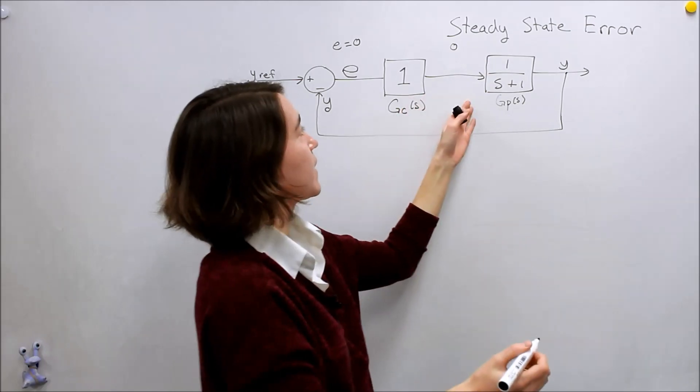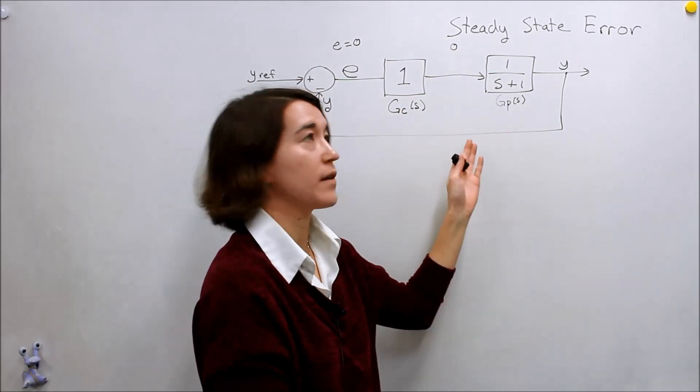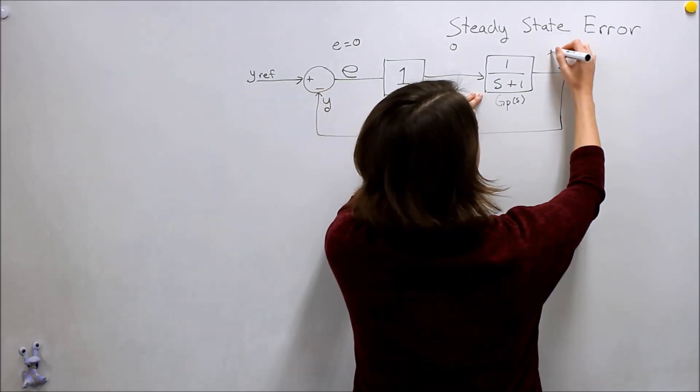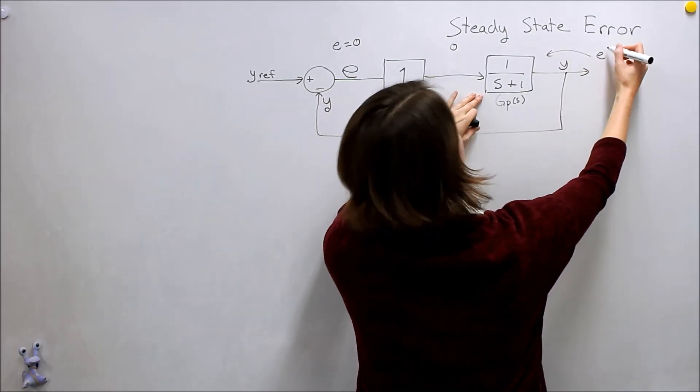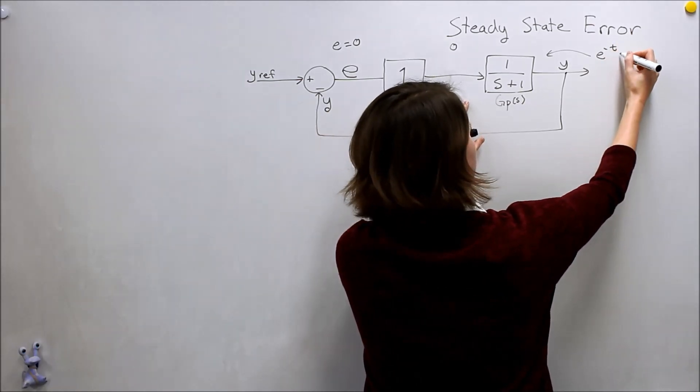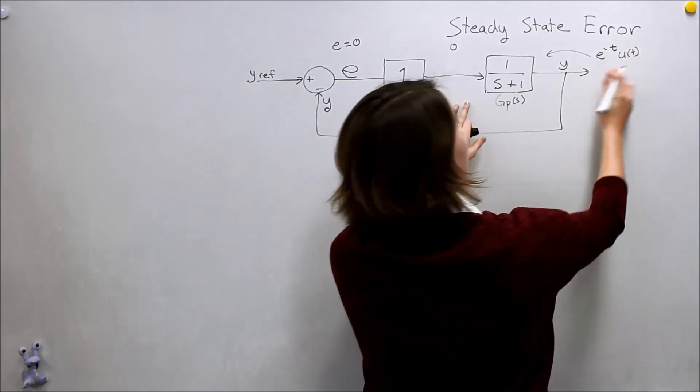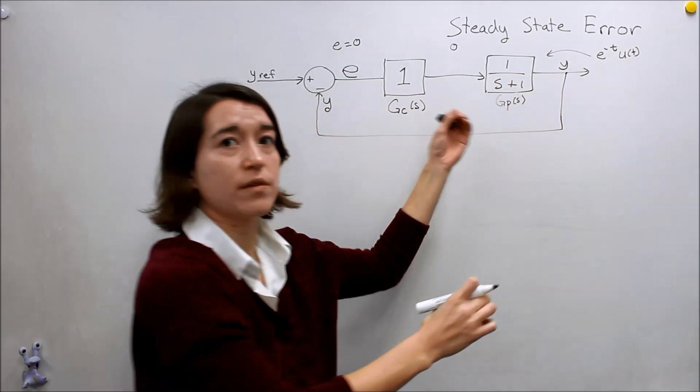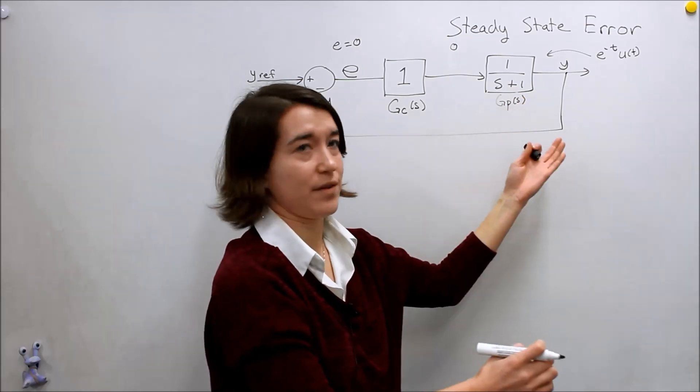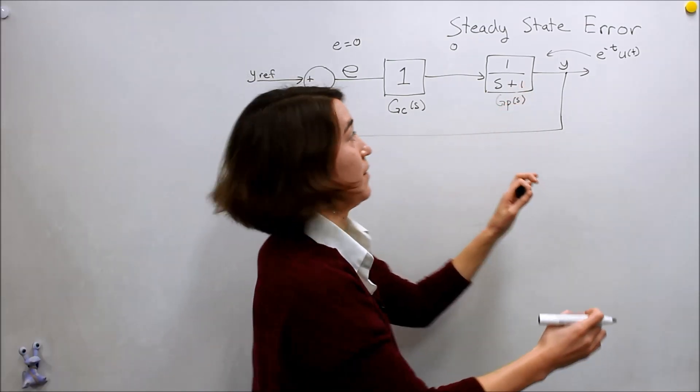The input here to our system would be zero. If we think about what this system is, this is equivalent to e^(-t) times your input, u(t), whatever the input value. If our input value is zero, meaning our step goes from zero to zero, our output will also be zero. That would mean that y is equal to zero here.